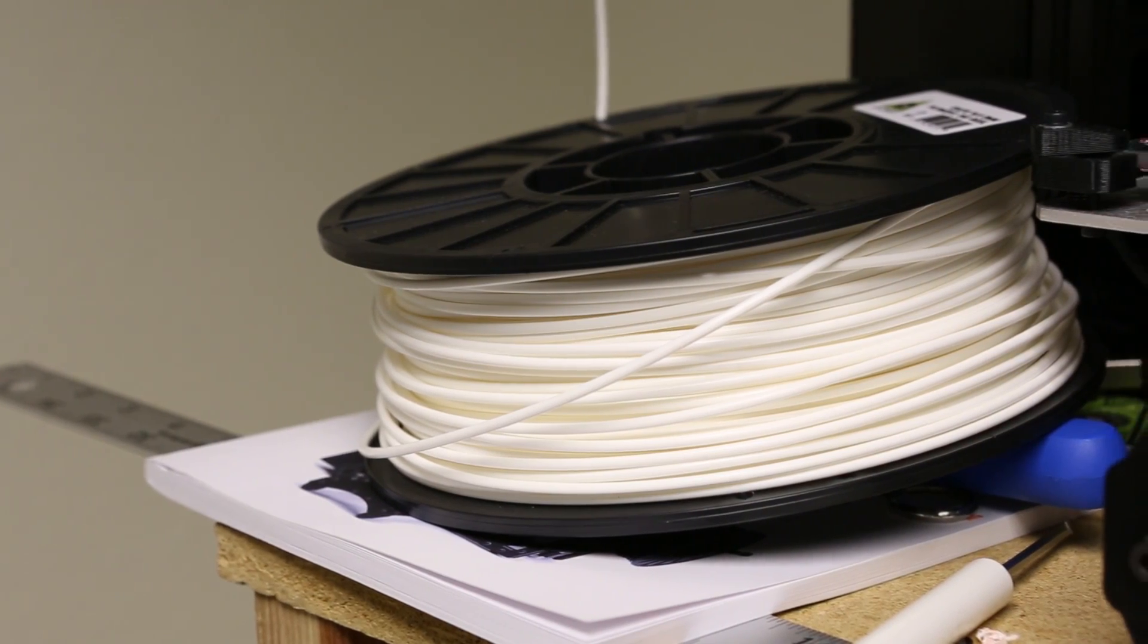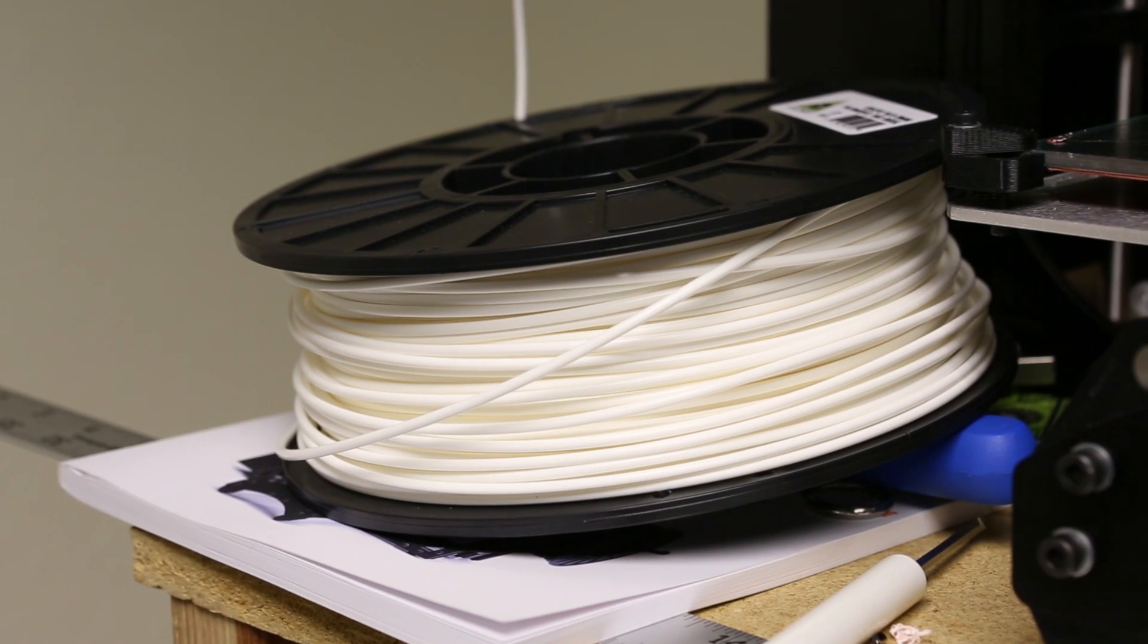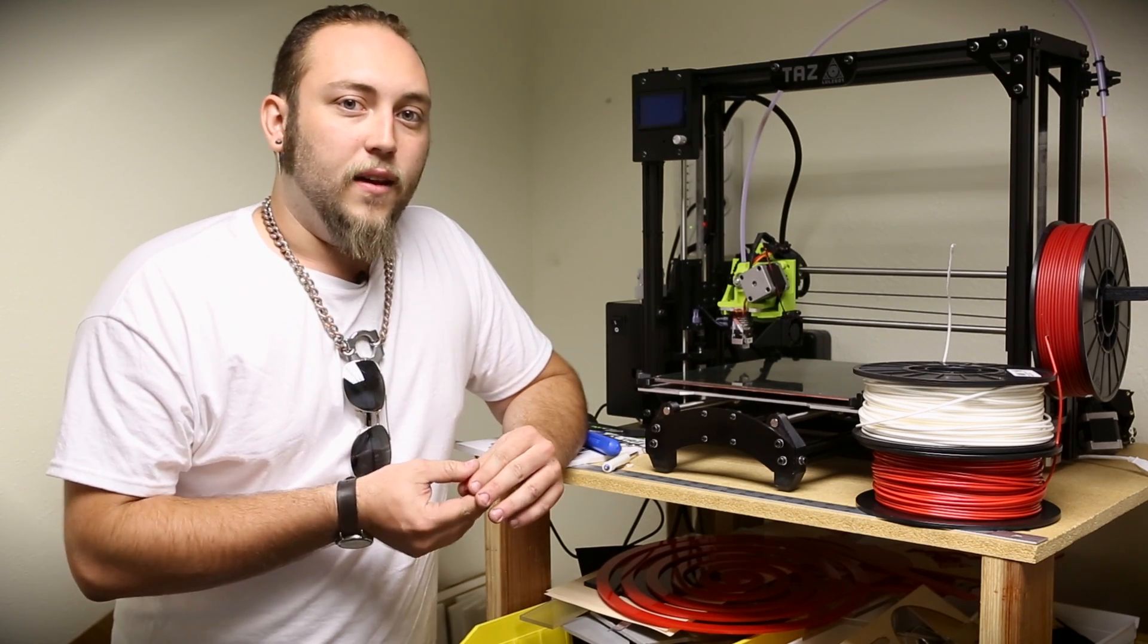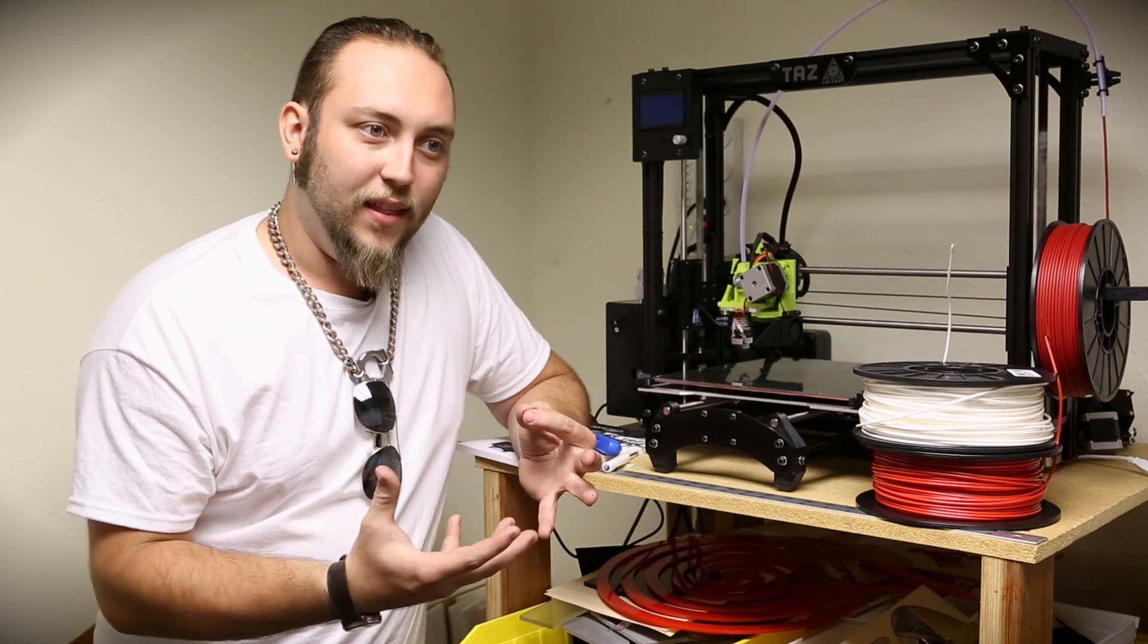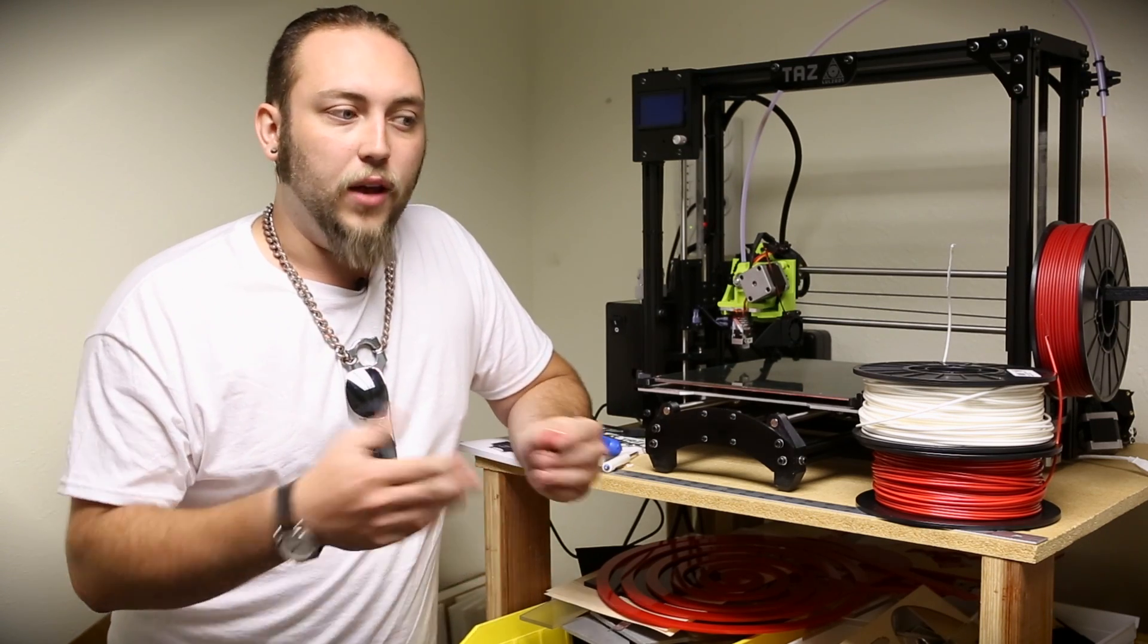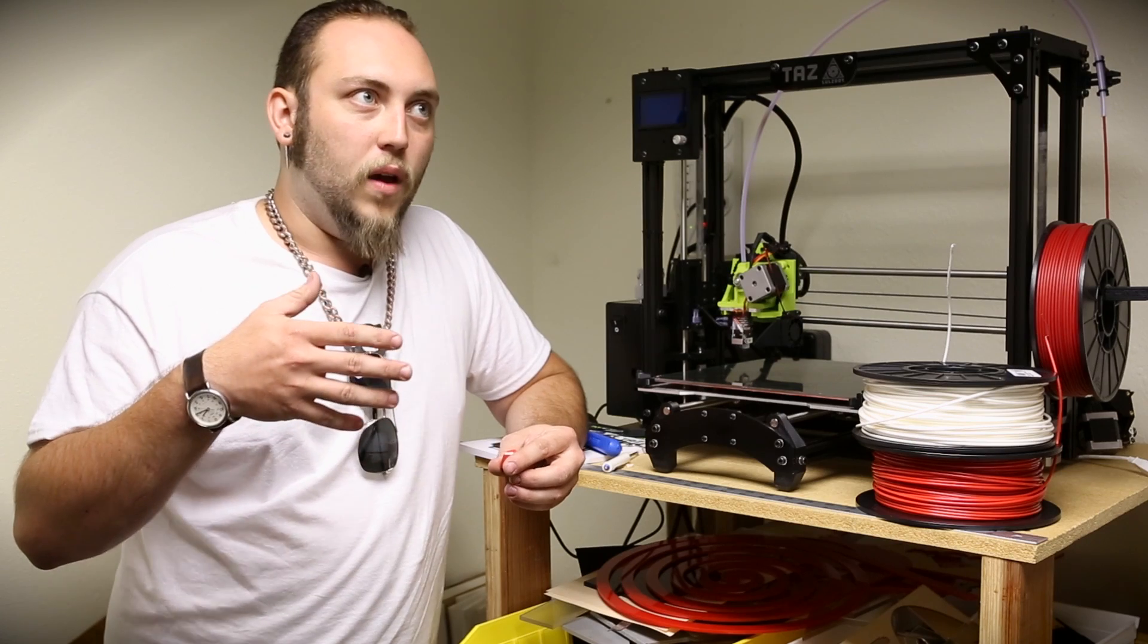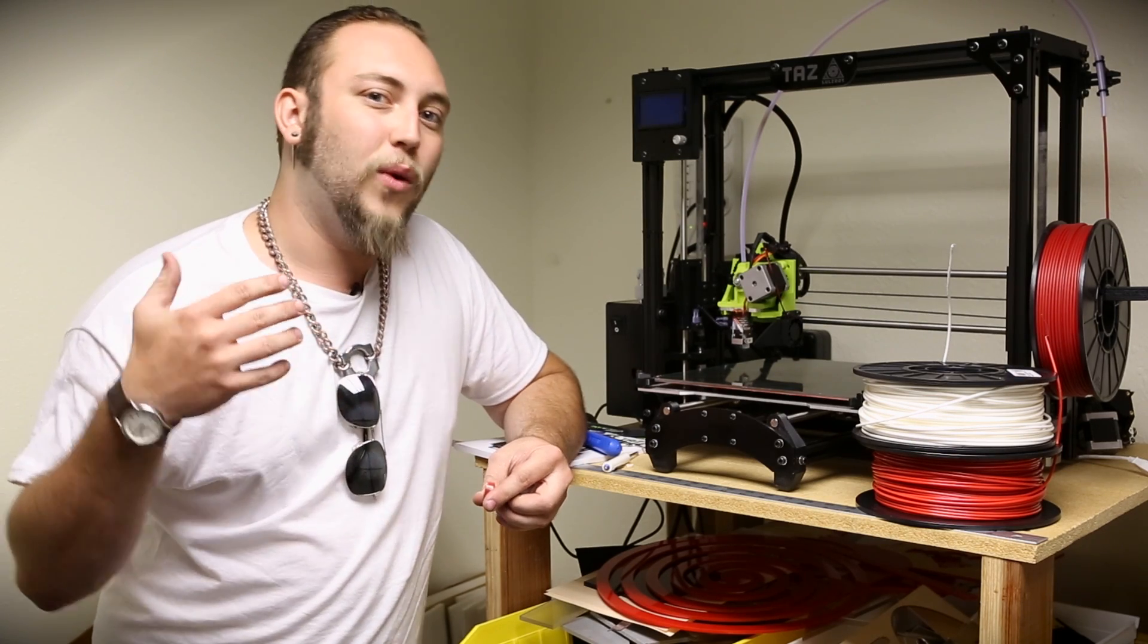Another filament that we carry is PLA, or polylactic acid. PLA is a biodegradable material, and it's actually made out of things like cornstarch or tapioca root. The nice thing about that is it doesn't off-gas anything while it's being heated for extrusion. And it's biodegradable, so it's better for the environment all the way around.